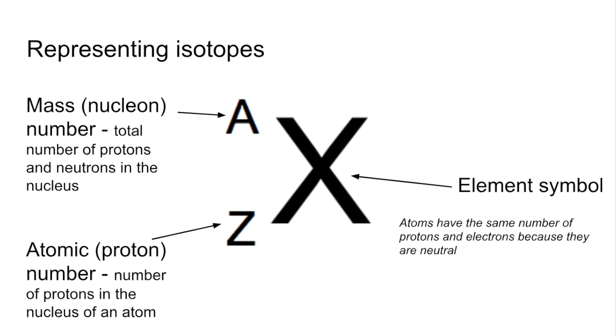That's obviously different for ions but we're going to come on to that. And since the protons and neutrons make up the mass of an atom, you can work out the number of neutrons by subtracting the Z, the atomic number, from the mass number. So A minus Z gives you the number of neutrons.